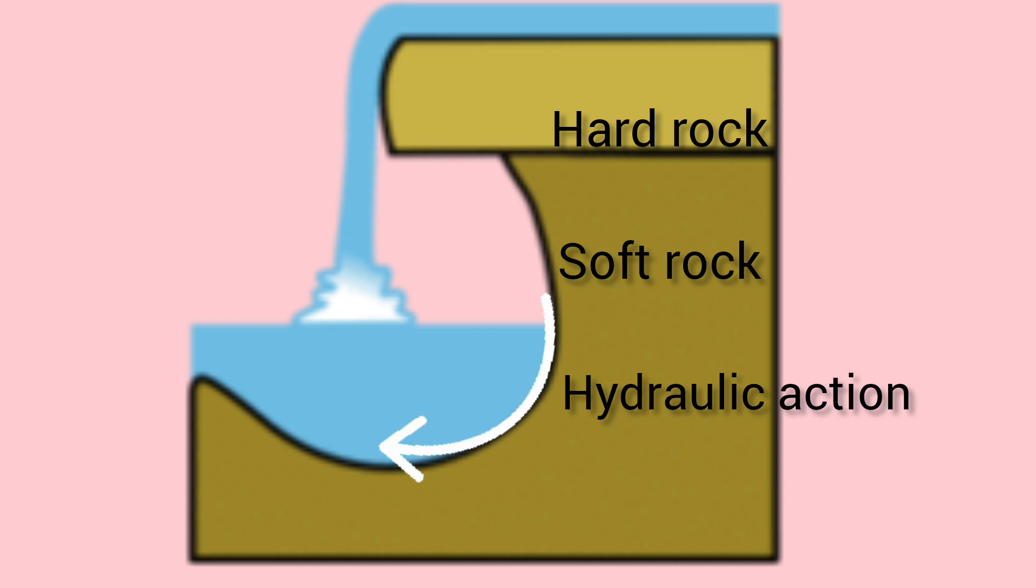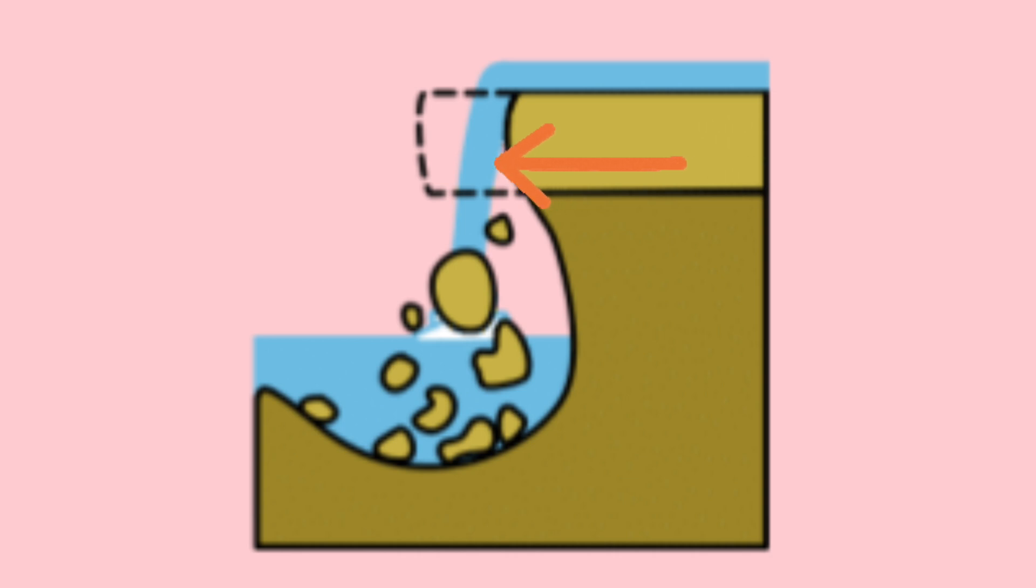Hydraulic action, which means the ability of moving water to dislodge and transport rock particles, and abrasion work together. Water and debris swirl around, eroding the rock through collisions, further deepening the plunge pool and creating an overhang.